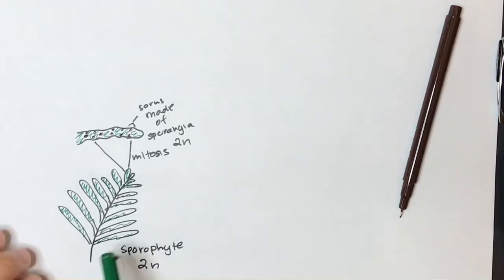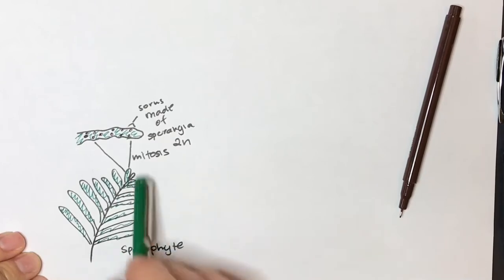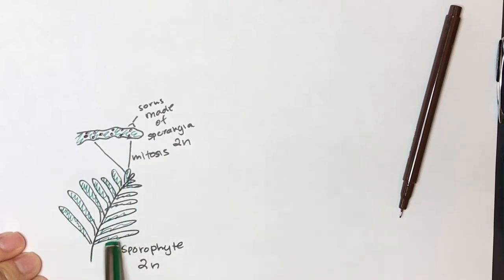I'm doing fern life cycle today. We're starting out with the part of the fern that you're normally going to see in your yard. Unlike the moss where the green part of the moss is the gametophyte, the main big green part of the fern is the sporophyte.